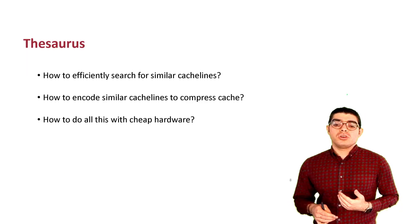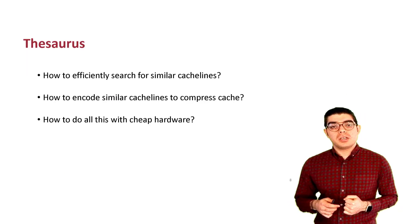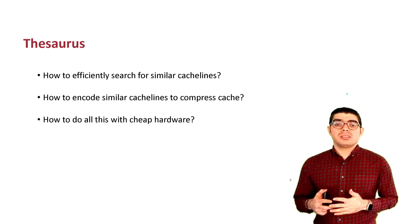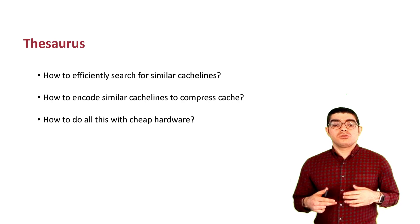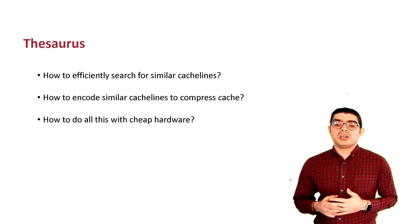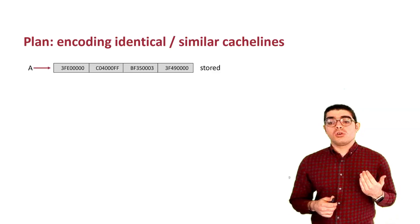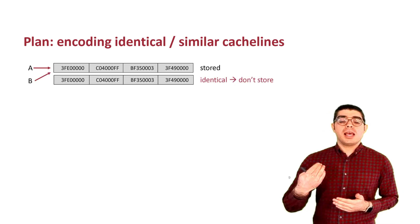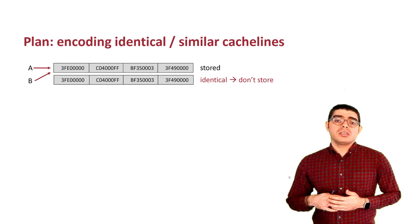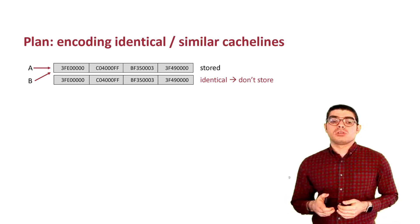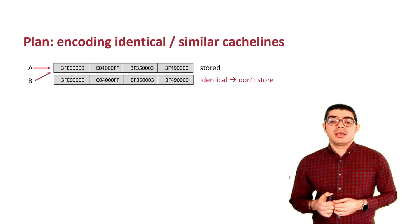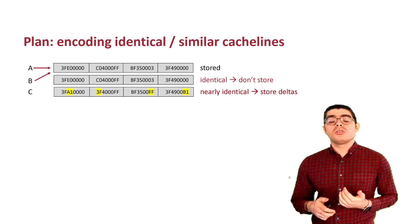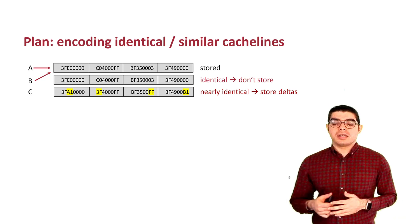In Thesaurus, we will show you how to search for a similar data line, how to encode similar cache lines to compress the cache, and how to do all of this cheaply in hardware. The plan is to avoid storing identical cache lines — for example, cache line B and A being identical, we just put a reference to a previously stored copy. In the case of nearly identical cache lines, such as cache line C, we only store deltas with an encoding.